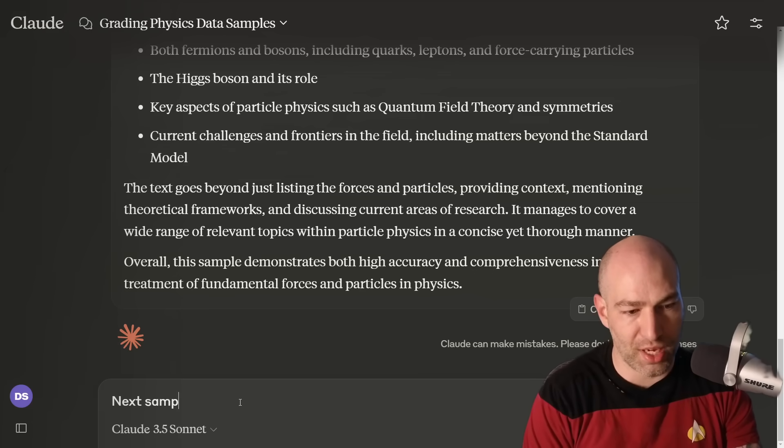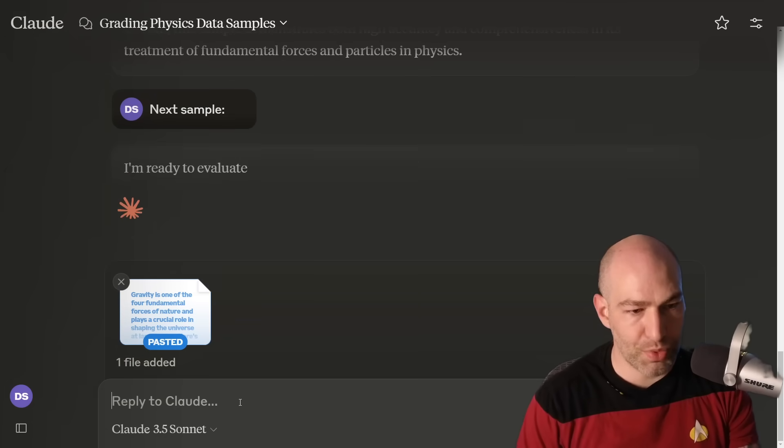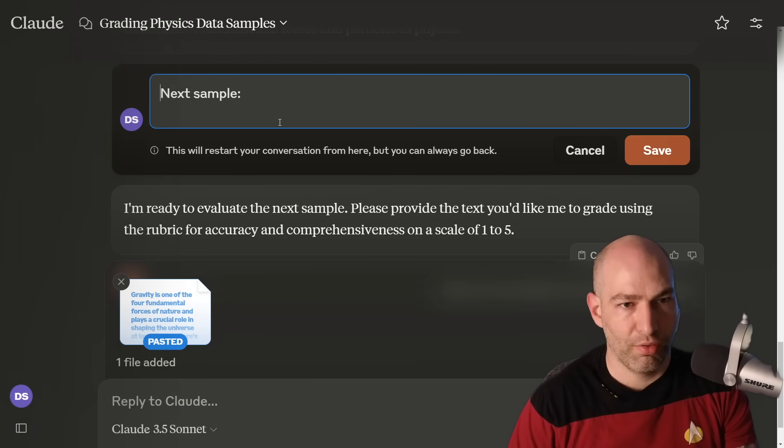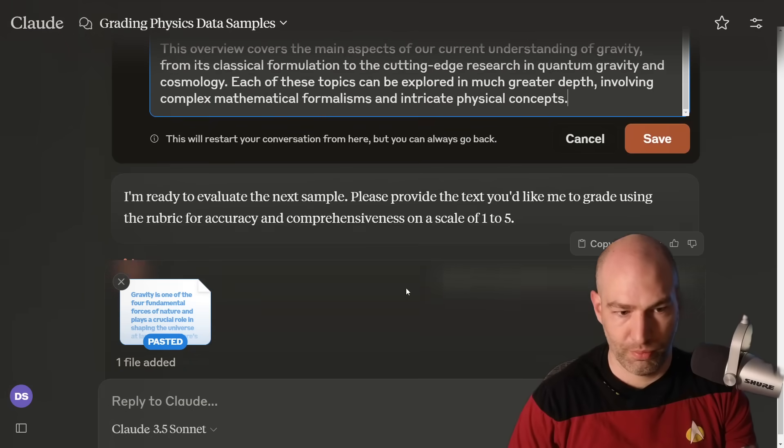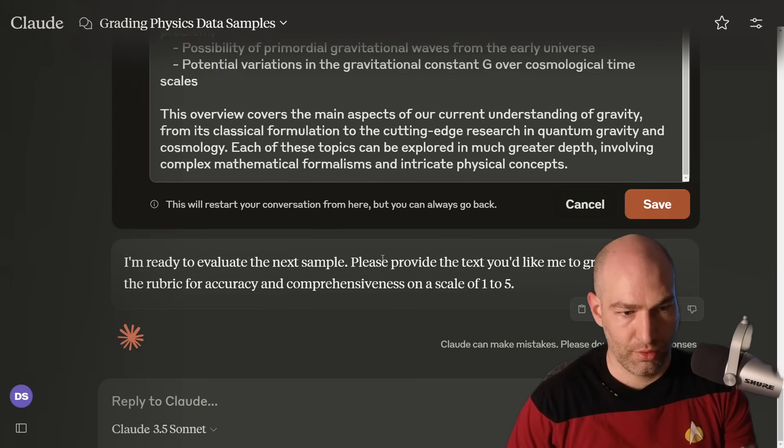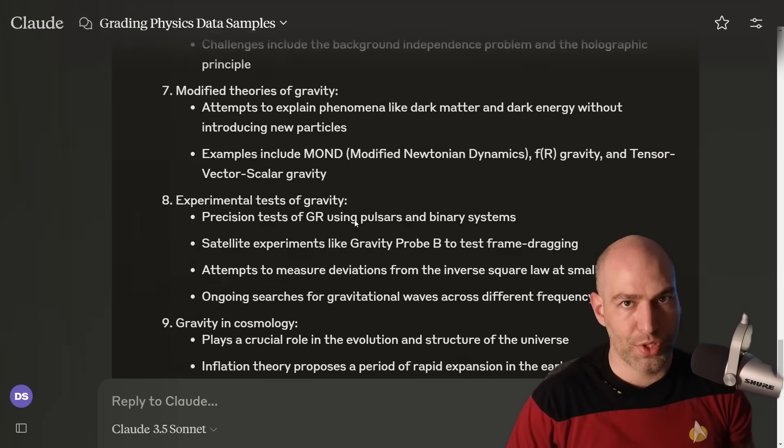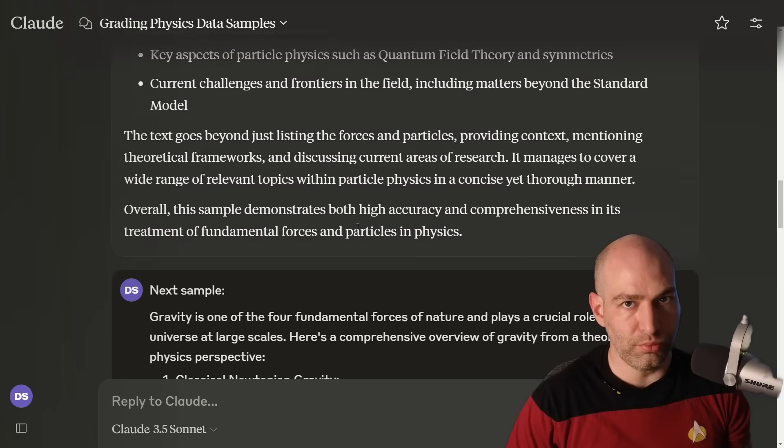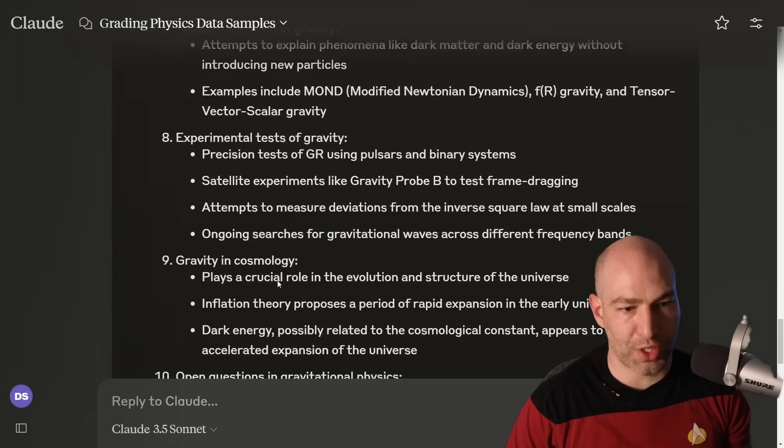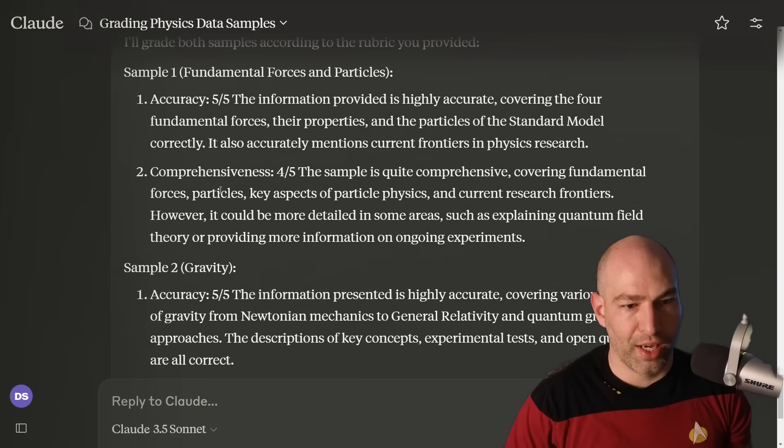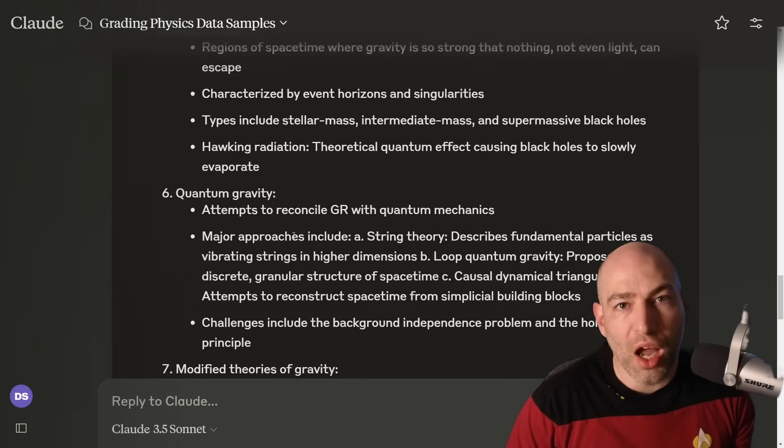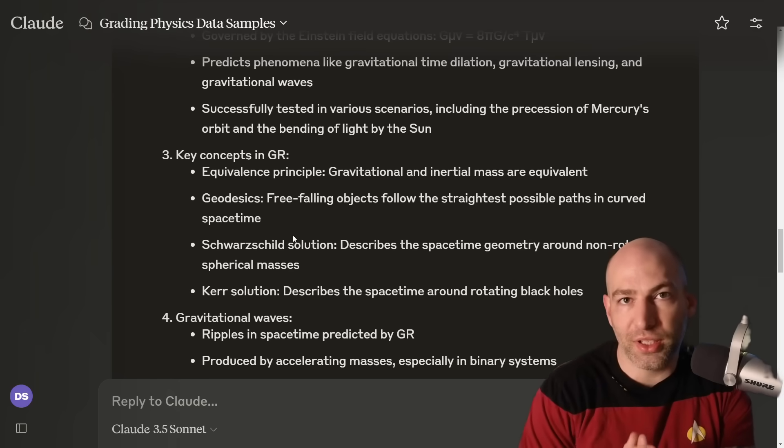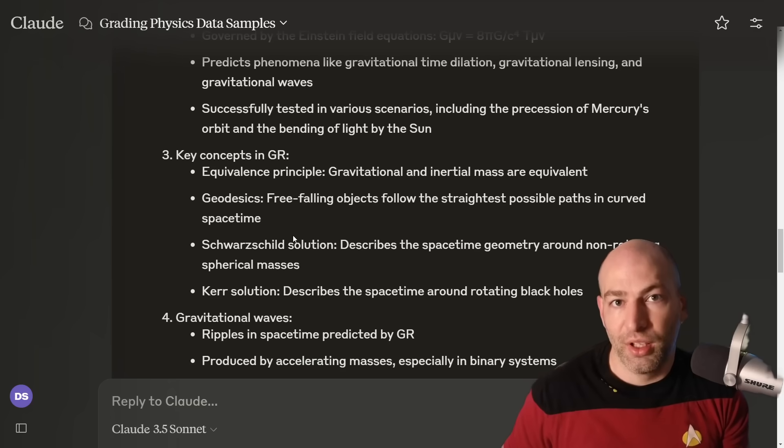So next sample. Whoops, sorry, fat fingered that. All right, there we go. Okay, so that's the next sample. And we're going to watch it grade it. And again, it graded it five out of five. I could see some room for improvement, but when you have basically, you're basically recursively writing a textbook of everything that humans know.